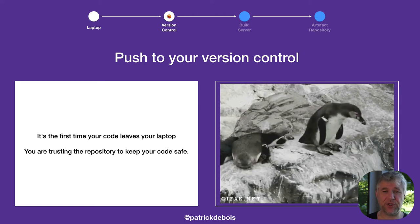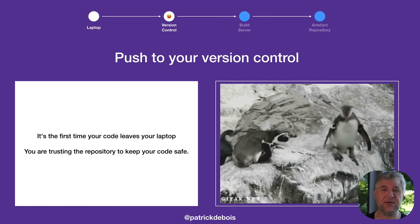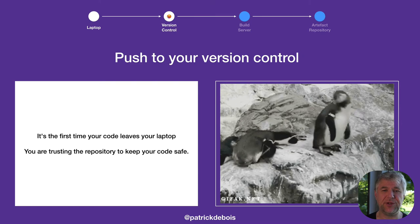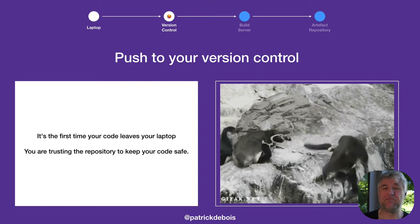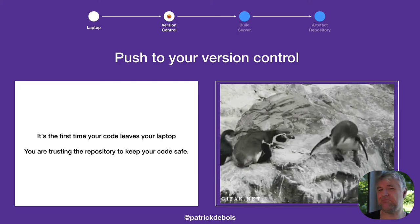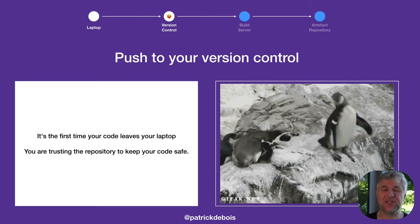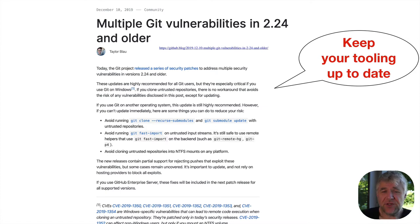Now we're ready to push our code — after writing parts of our own code, assembling others, and making a nice application. We're ready to push to version control. At this point, are you still trusting your laptop? We take some precautions. It can't be 100% safe. So first thing you might not consider: is your Git binary actually secure? This is a friendly reminder to keep your tooling up to date — we tend to keep our libraries more up to date than our tooling.